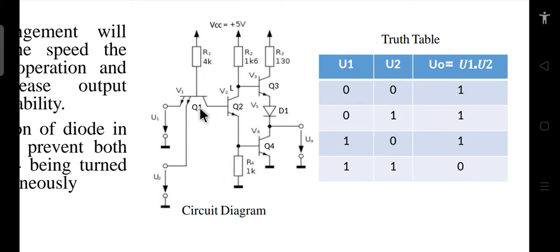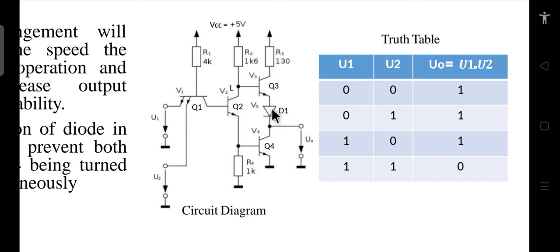On the input side you can see transistor Q1, which has multiple inputs where we apply our input voltages. R1 is one resistance with a value around 4 kΩ. Apart from that we have transistor Q2, transistor Q3, one diode D1, and transistor Q4 from where we take the output, along with one more resistor.